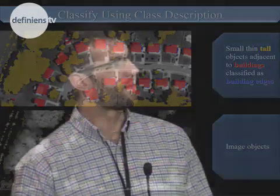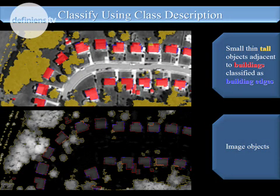We've gotten rid of those buildings. We also have some problems with the contrast split segmentation — we've got these little features next to buildings. Fortunately, they're small, they have high length-to-width ratios, and they're adjacent to buildings, so I can call them building edges. I can then remove them by growing the unclassified features in the background into them, taking them out of the equation.